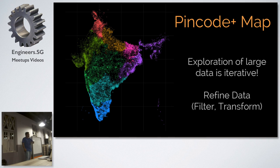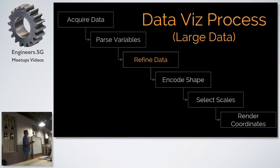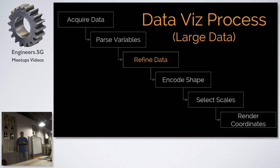The database process for large data is: acquire the data, parse the variables, do some refinement — transformations, filtering, or aggregation — then encode into shapes, select scales, and render the coordinates.